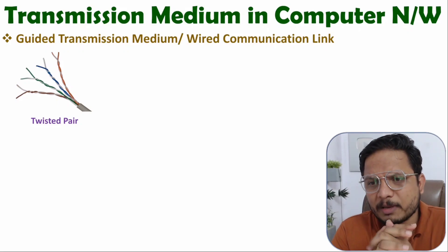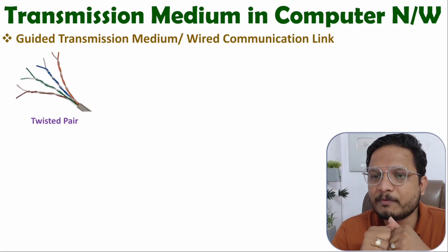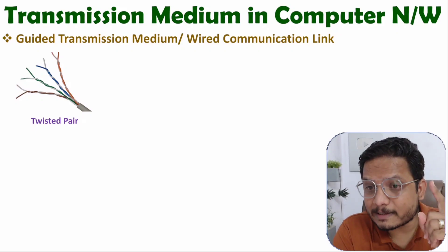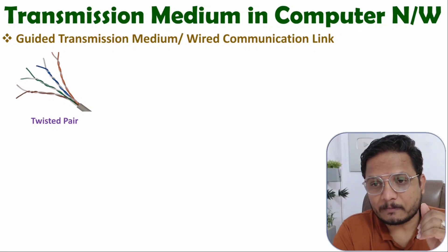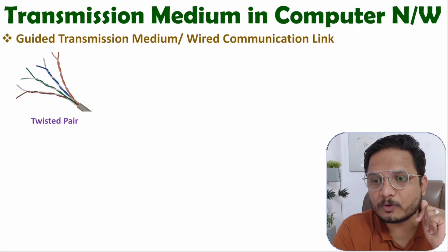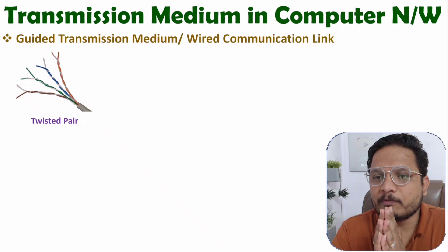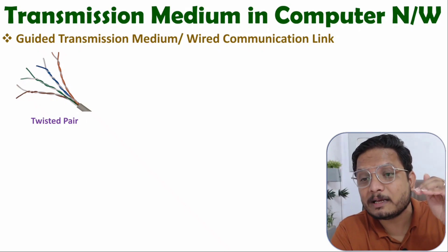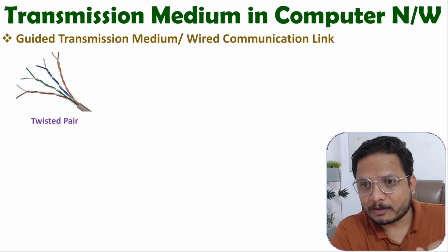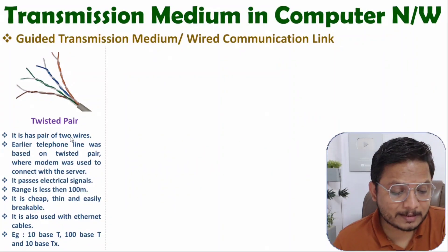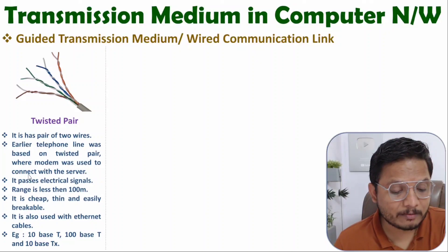A brief history: this twisted pair cable was used in the early 1990s with telephone networks. In the 1990s, telephone networks were providing internet connections. This type of cable was used in that period. Right now, we use ethernet cable and optical cable for internet, but in the early 1990s, internet was deployed along with telephone lines using this type of cable, where a modem was used to connect to the server.